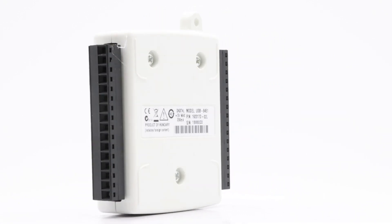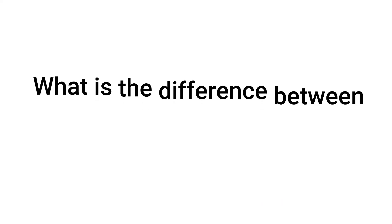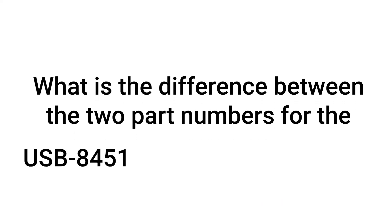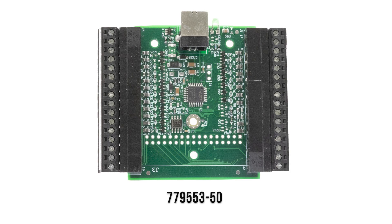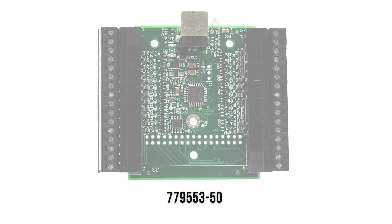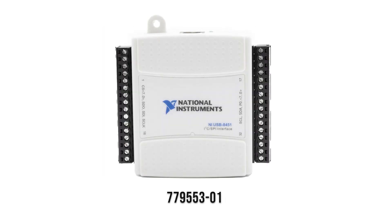Here are some common questions about the USB 8451. What is the difference between the two part numbers for the USB 8451 National Instruments? The first part number, 779553-50, is not an enclosed device. However, the second part number, 779553-01, is an enclosed device.